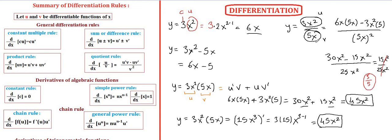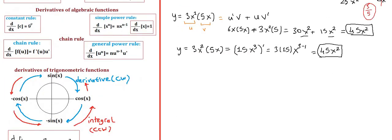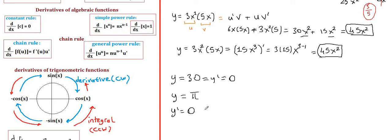Let's see the constant rule. The derivative of a constant is 0. If y equals 30, then y prime equals 0. Similarly, y equals pi — pi is a number and a constant, so y prime is 0. And y equals e — e is also a constant in math, so y prime is 0. Don't confuse these with variables; they are just numbers.